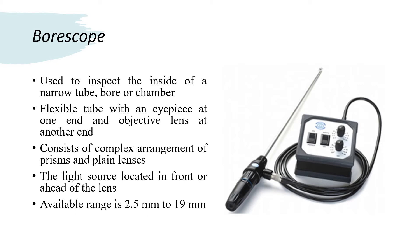So students, in summary, the boroscope is used to inspect the inside of a narrow tube or chamber. It is a flexible tube with an eyepiece at one end and an objective lens at the other end, consisting of a complex arrangement of prism and plane lenses. The light source is located in front or ahead of the lens, and the available diameter range is 2.5 mm to 19 mm. This is the boroscope, which helps to detect or find out the cracks or flaws by visual inspection.